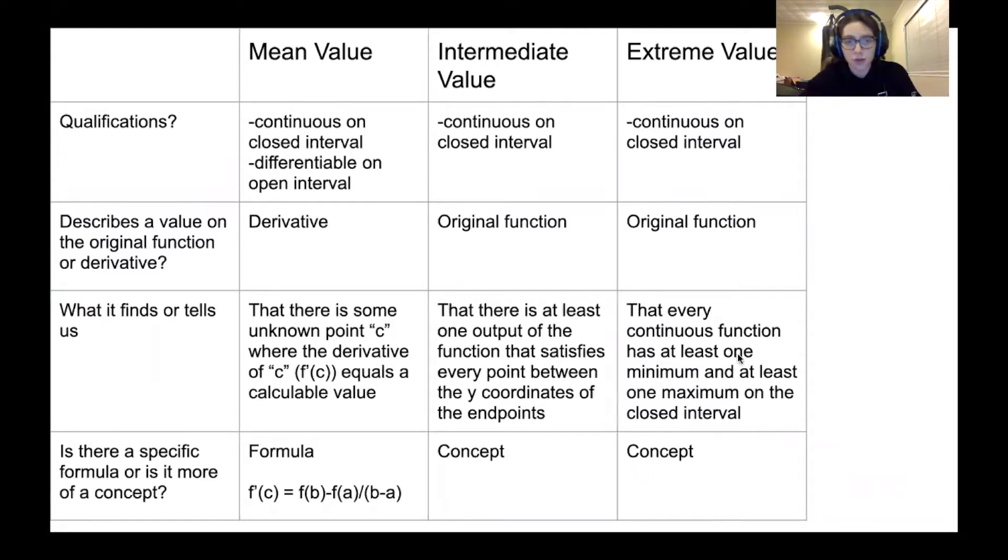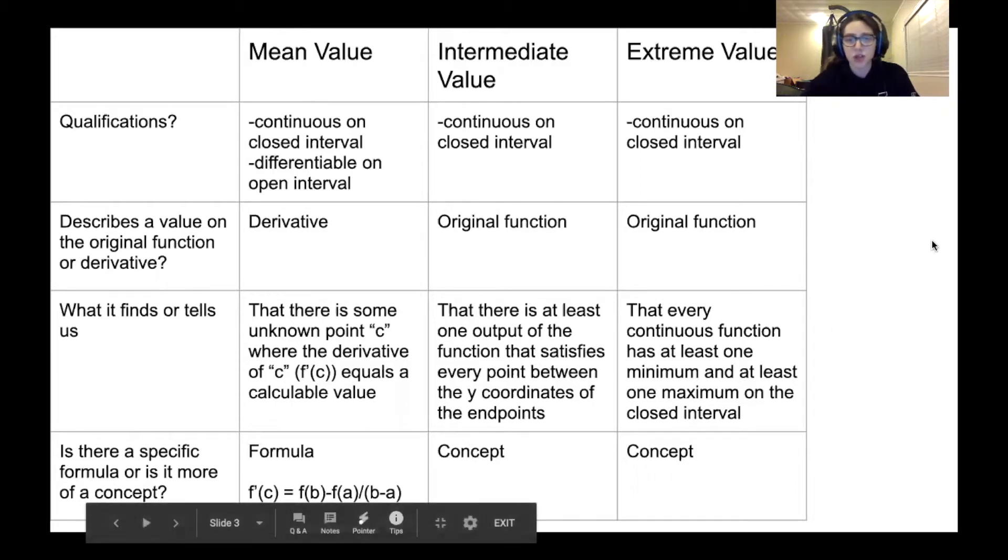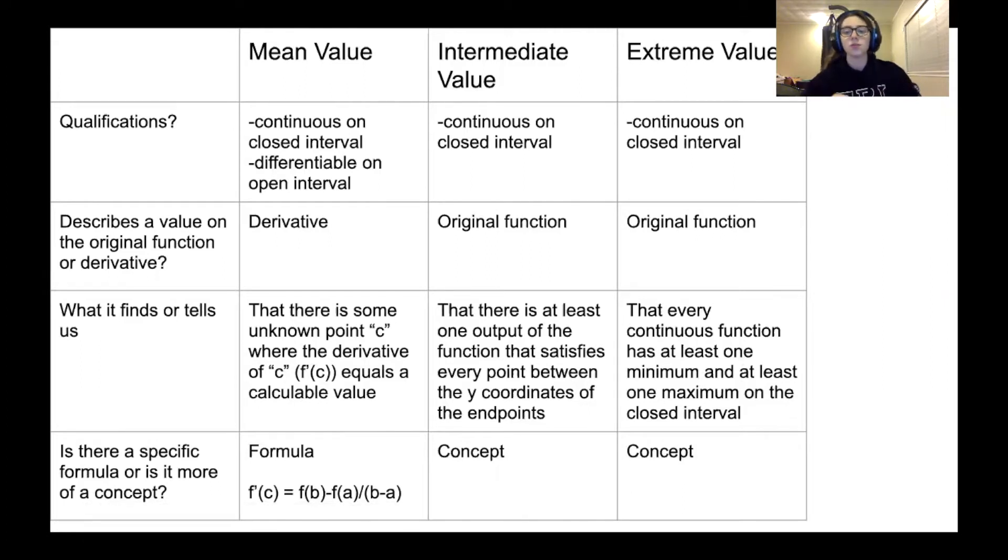So all of them, for extreme, mean, and intermediate value theorems, it all has to be continuous on the closed interval. But for the mean value theorem, it also has to be differentiable on the open interval. The intermediate and extreme value theorems tell you something about the original function, but the mean value theorem is for derivatives. This is what it finds. It's the definition. I kind of went over that in the last slide. And then one other difference is that the intermediate and extreme value theorems, they're more of concepts, whereas the mean value theorem is a specific formula. Of course, it's tied to a concept as well, which tells you how to use it, when to use it, and why to use it. But that is actually a specific formula. Well, the intermediate value and extreme value theorem don't have set mathematical formulas the same way.